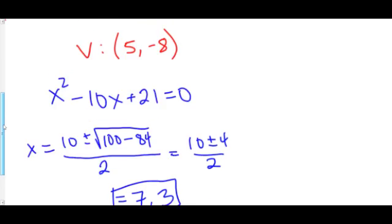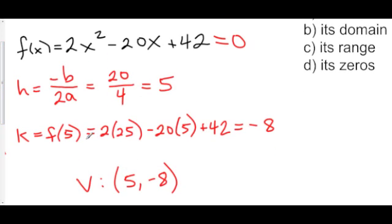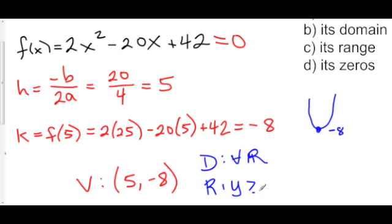Finally, we can find the domain and the range of this function by looking at the vertex once again. Our a here is positive, which means that our parabola is going up. And our vertex is at 5, negative 8, which means that negative 8 is the minimum value of y. Again, x can vary infinitely. It can go to negative infinity. It can go to positive infinity. So the domain here is x is all reals. And our range, y has to be bigger than or equal to negative 8.